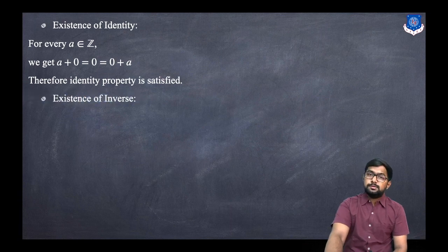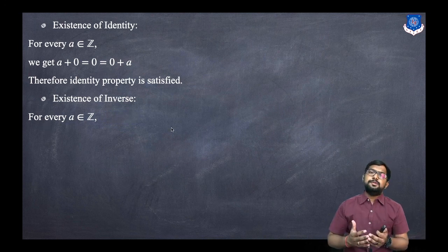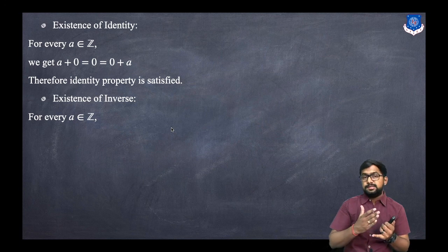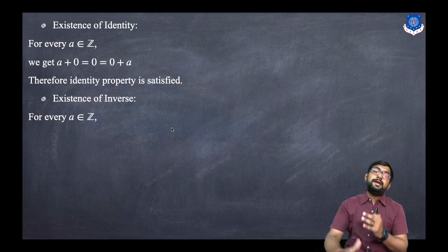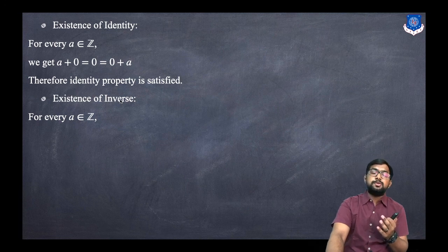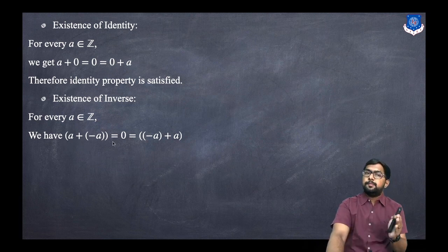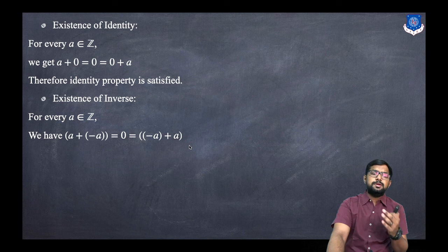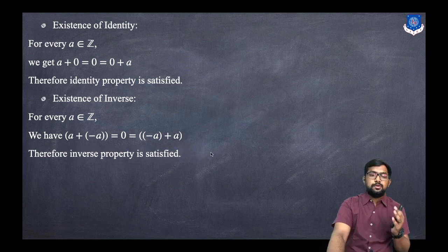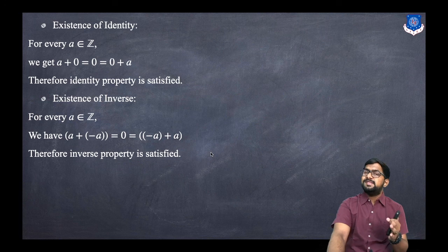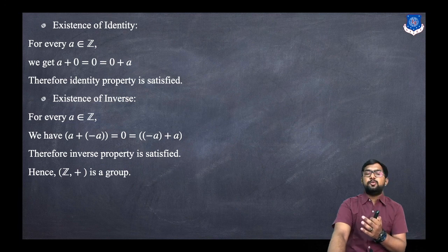Now for existence of inverse: for every A belonging to Z, we need A + B = 0 (the identity element). Taking B = -A, we get A + (-A) = 0, and the same holds when we change the position. Therefore the inverse property is satisfied — each and every element has an inverse. Hence Z+ is a group.